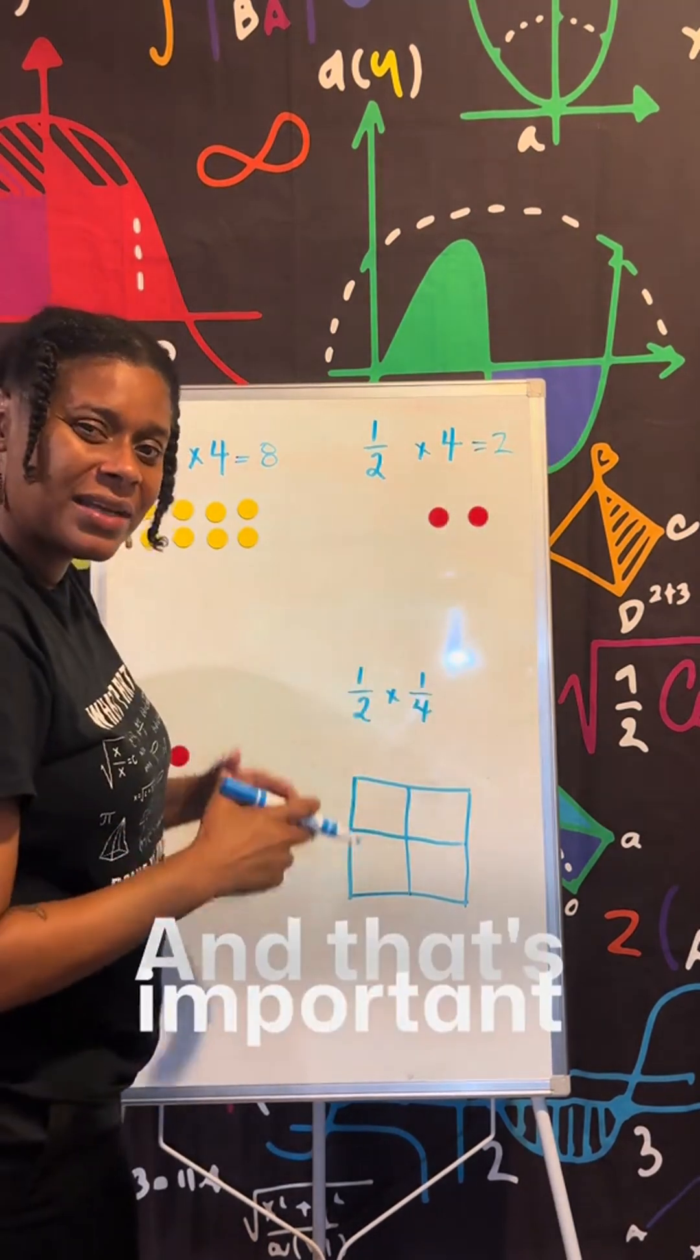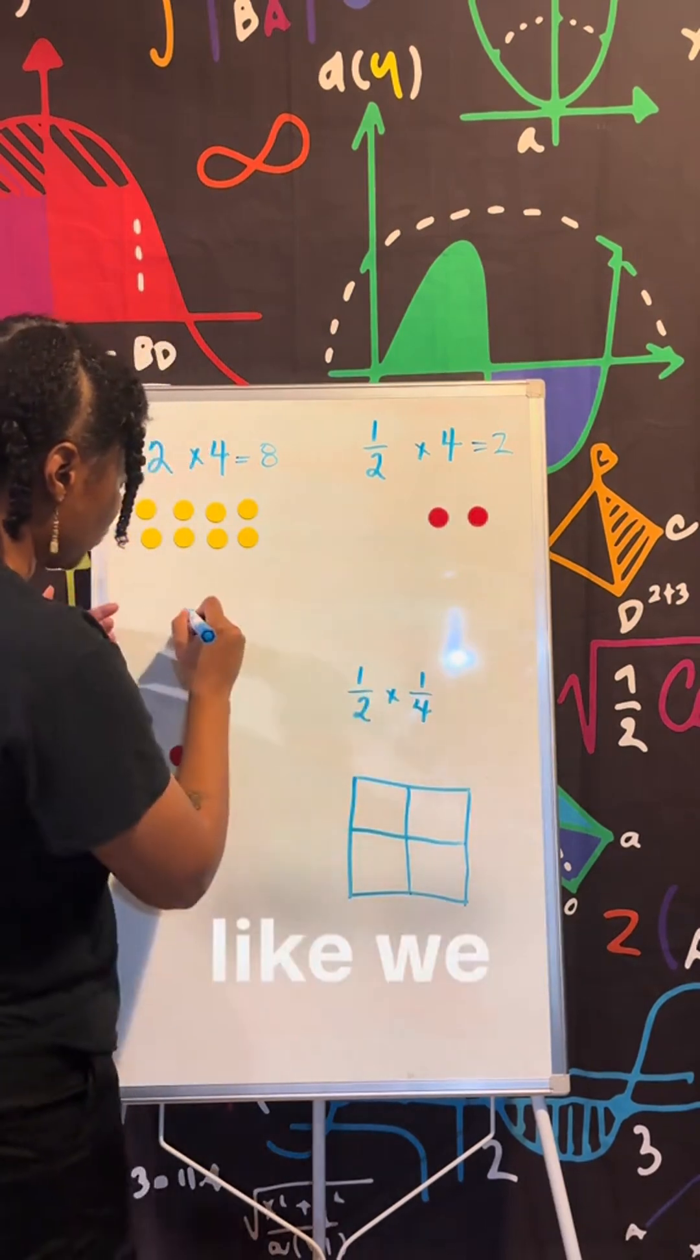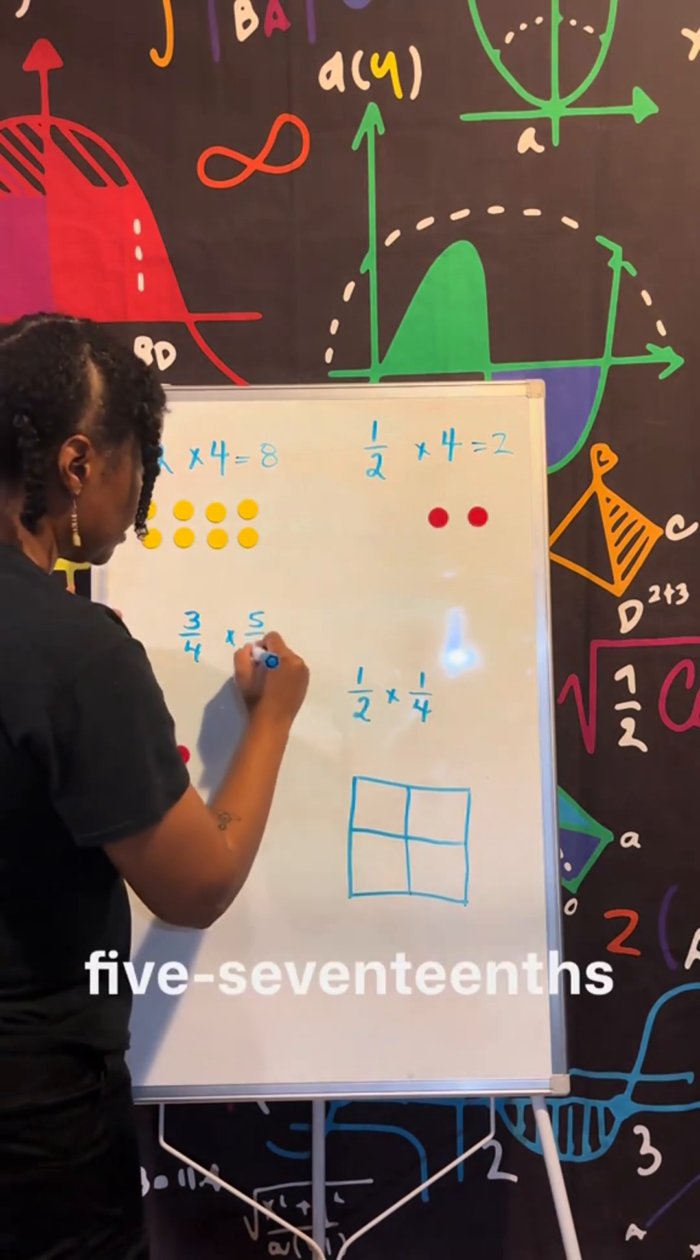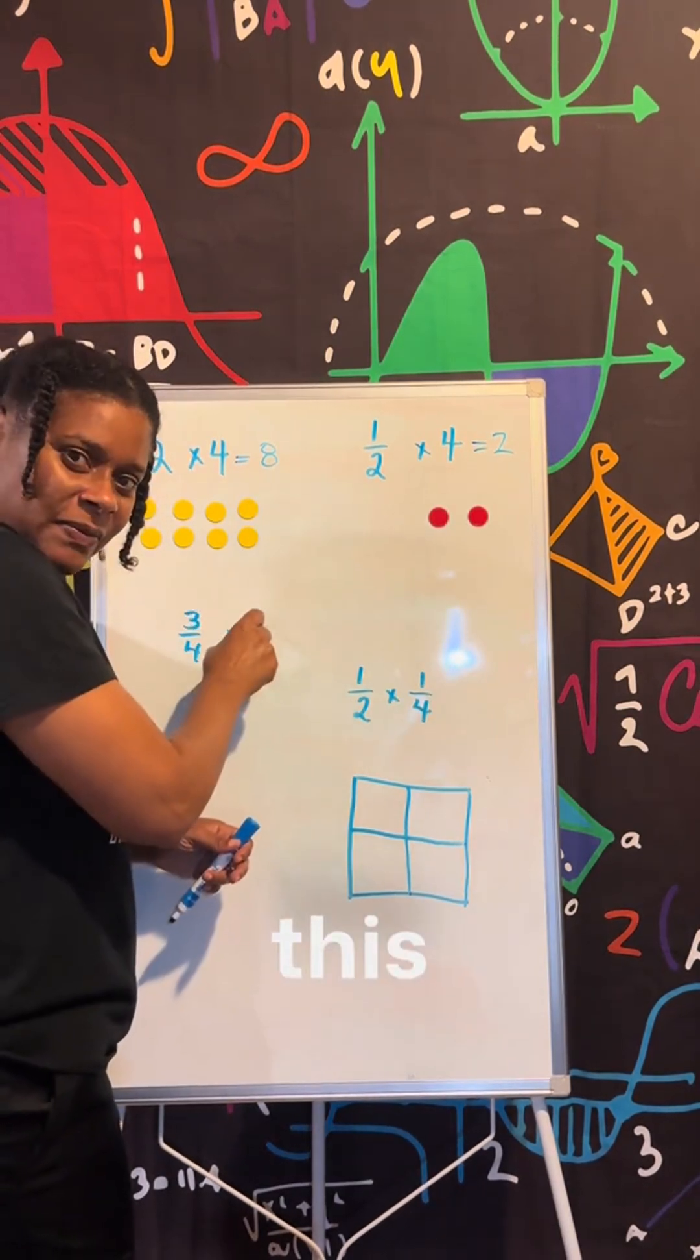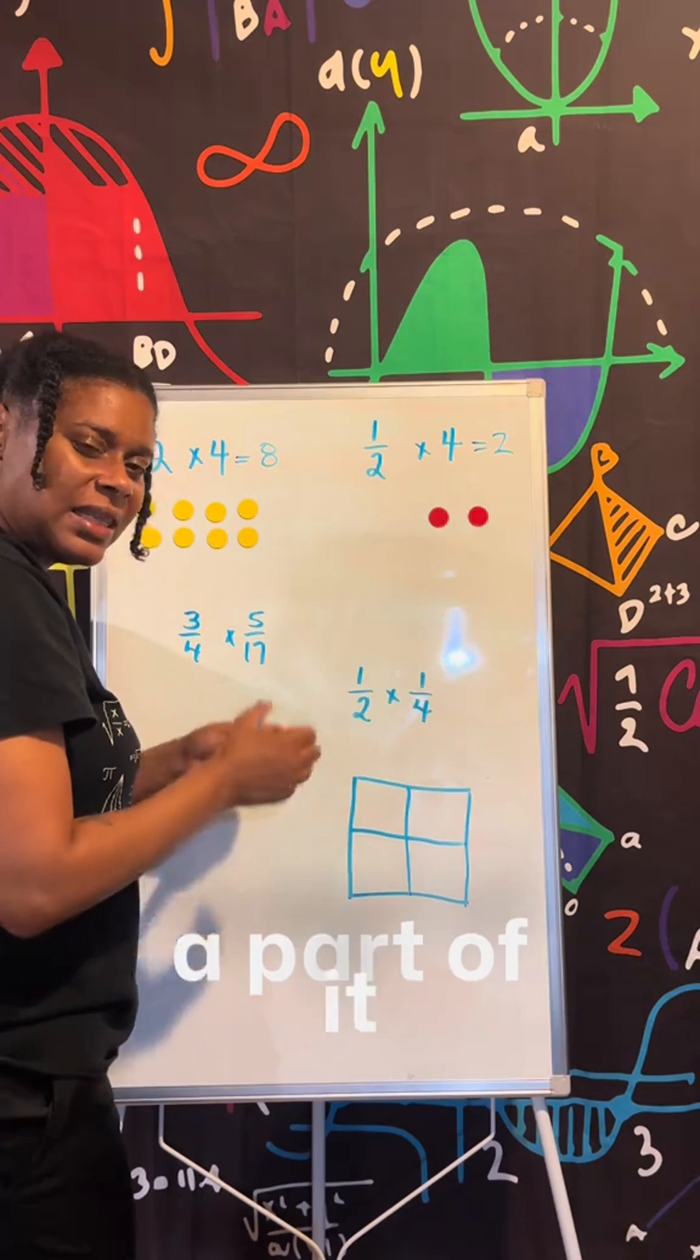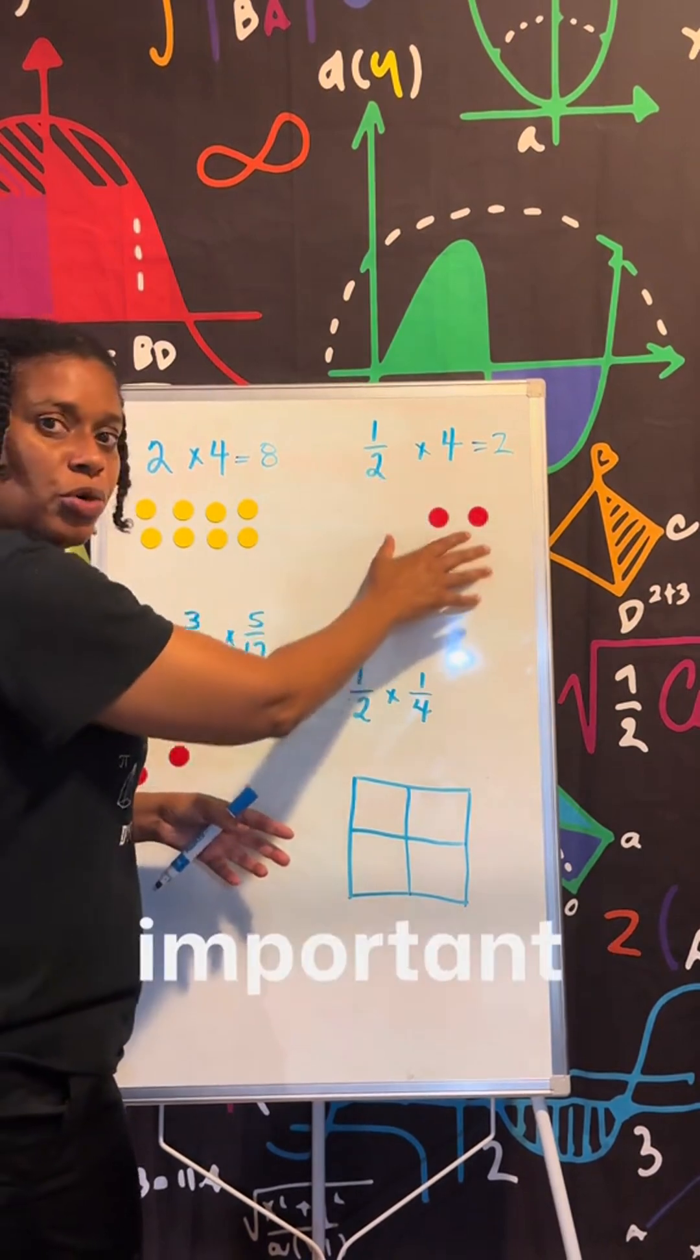And that's important. And that's OK, because we want them to understand before we start going with more complex numbers like three fourths of five seventeenths. We at least want them to understand that I'm taking three fourths. I'm taking a part of this that is already a fraction. So if I'm just taking a part of it, that means that my answer should be less than what I'm starting with. So the understanding is what's important here.